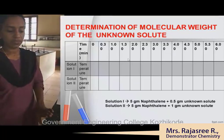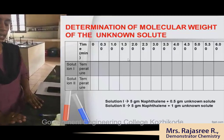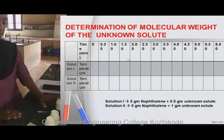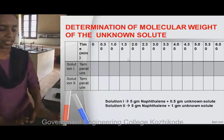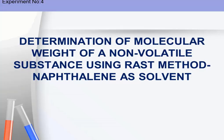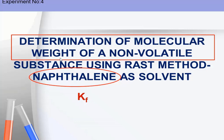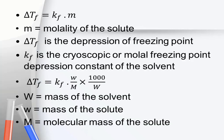Now we have to find out the molecular weight of the unknown solute. This experiment is repeated by taking 5 grams of the solvent and 0.5 gram of the unknown solute. So by this experiment we are validating the colligative property — the depression in freezing point — by taking naphthalene as a solvent and adding camphor to it, and from that we can find out the molar depression constant of naphthalene.